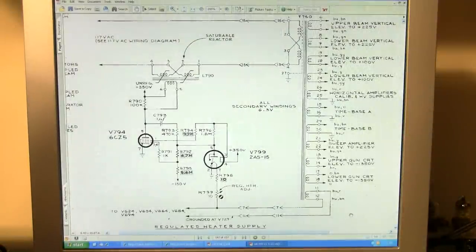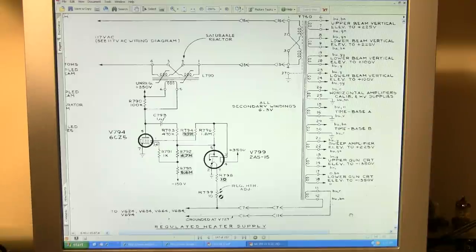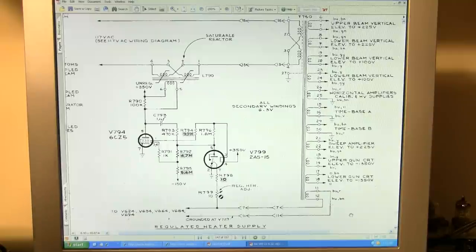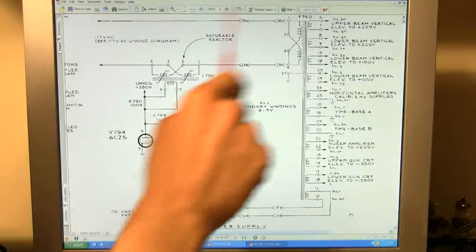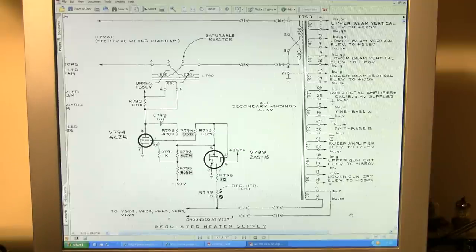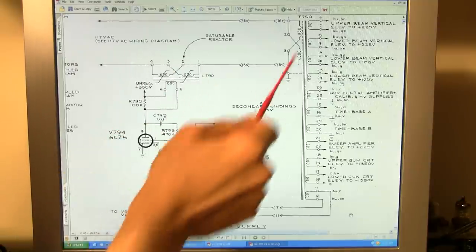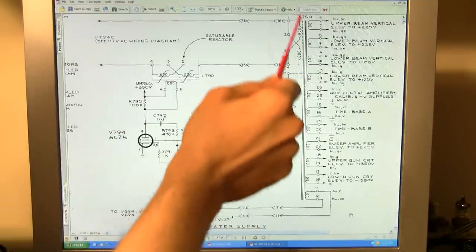Here we have the regulated heater supply portion of the schematic of my 555 Tech dual beam oscilloscope. I'm just going to explain this small part of the schematic because this really is a unique design by tech and kind of warrants a bit of an explanation. So, this circuit is responsible for regulating all the heater voltages in the entire oscilloscope.